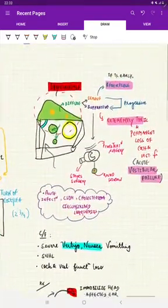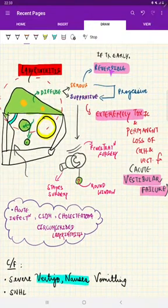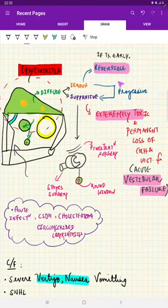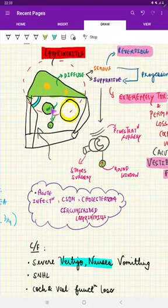Now, after finishing this, let us move on to the diffuse labyrinthitis. So as we have already said, diffuse labyrinthitis serous is reversible early, and if it is not treated early, it will progress to suppurative. Now, if at all, we think infection has to go through the oval window and the round window, what should have to happen?